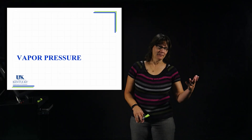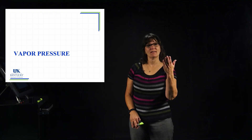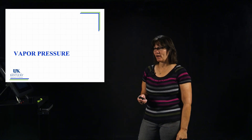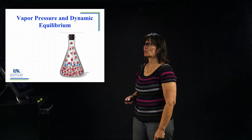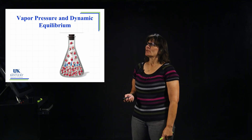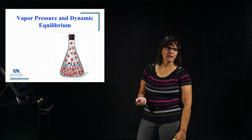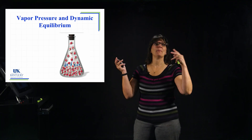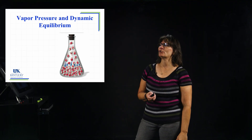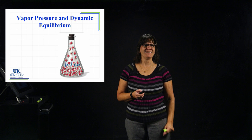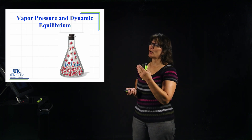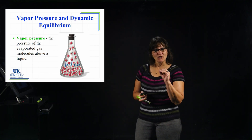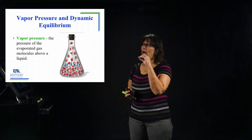Once you get things evaporating and have this vaporization process, you can have something called vapor pressure. We're going to find what the pressure is and what affects the magnitude of vapor pressure. We see a picture here of some water in a flask with a lid on it. Vapor pressure is the pressure above the liquid in a sealed container of a specific liquid.